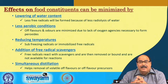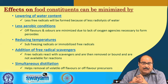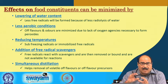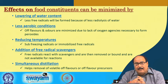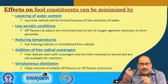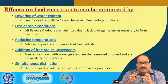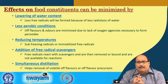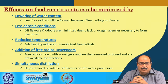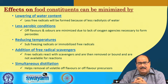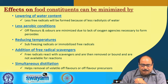Addition of free radical scavengers is another approach — depending upon the type of food, such as liquid or powdery systems, free radical scavengers or chelating agents can be added. These can bind with metals and other free radicals, stopping free radical-initiated chain reactions. Simultaneous distillation is another suggested means, helping in the removal of volatile off flavors or off-flavor precursors during the process.